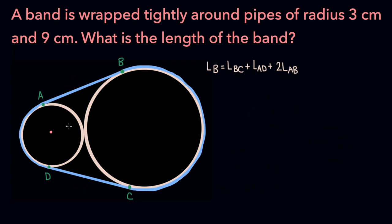Let's say the center of the small pipe is roughly here, and the center of the large pipe is here. Let's call the center of the smaller pipe E, and the center of the larger pipe F.